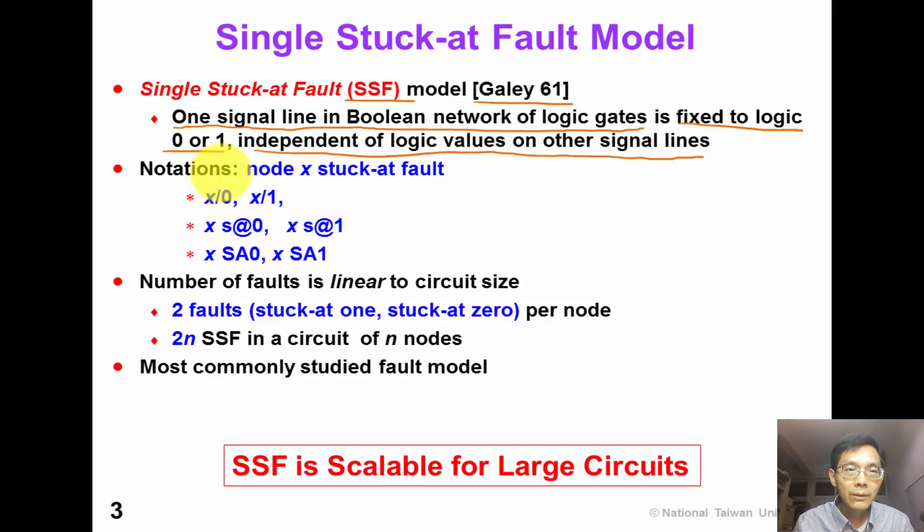The single stuck-at fault notation is like this. For a node X stuck-at fault, it can be written as X@0 or X@1. Somebody also writes it as x at 0 or x at 1 or SA0, SA1. The above three notations all indicate single stuck-at fault. The number of single stuck-at fault is linear to the circuit size, because we have two faults per node, which are stuck-at 1 fault and stuck-at 0 fault.